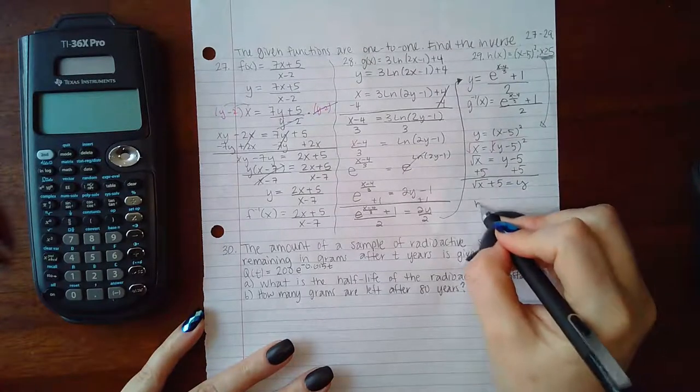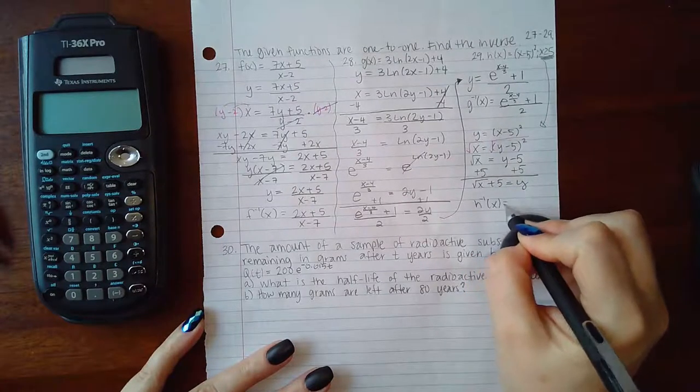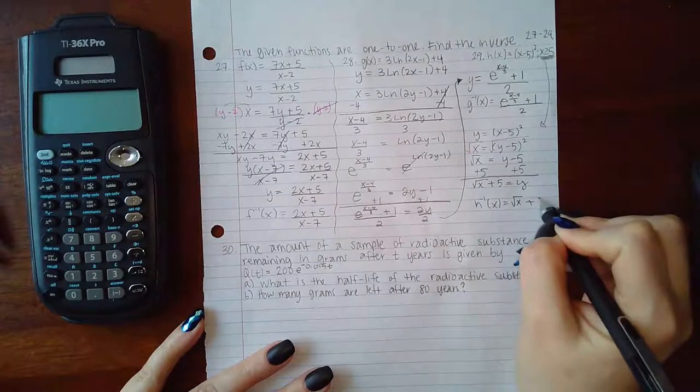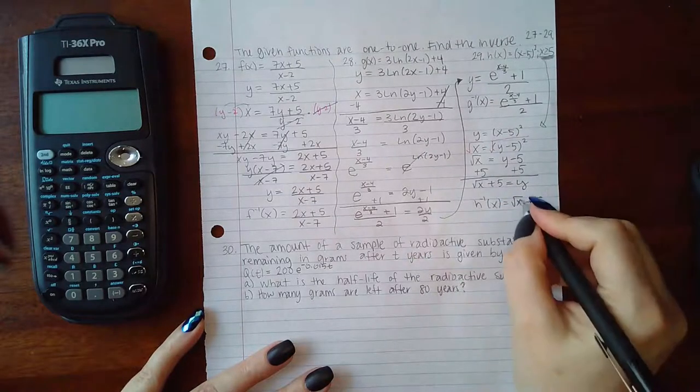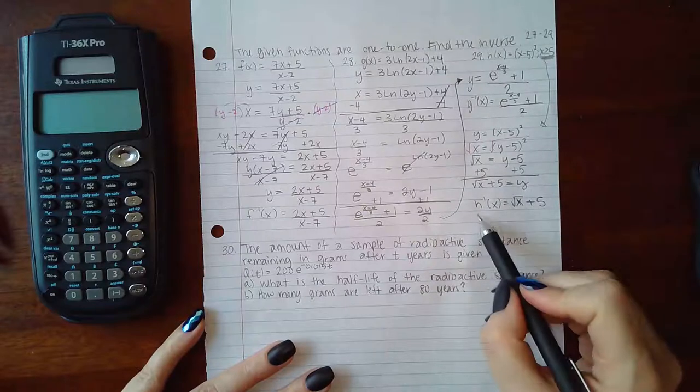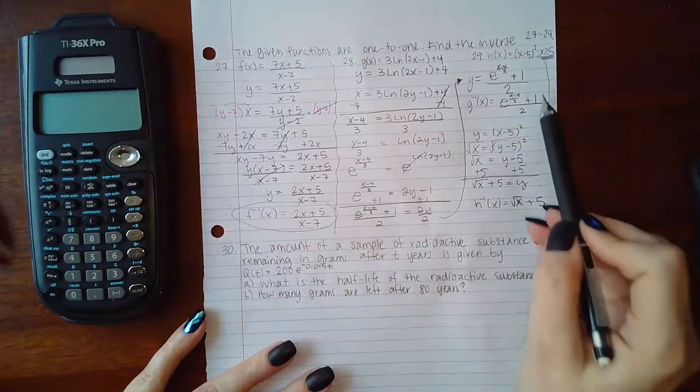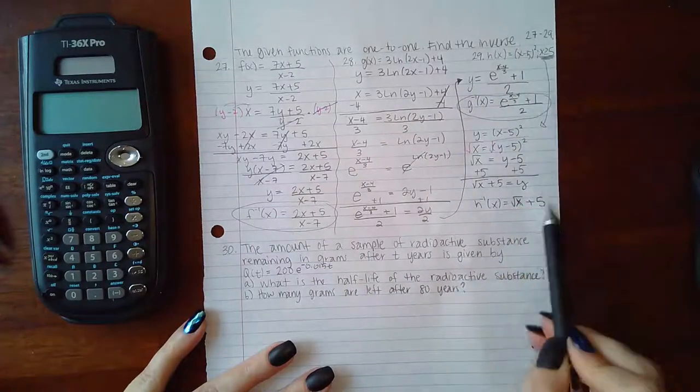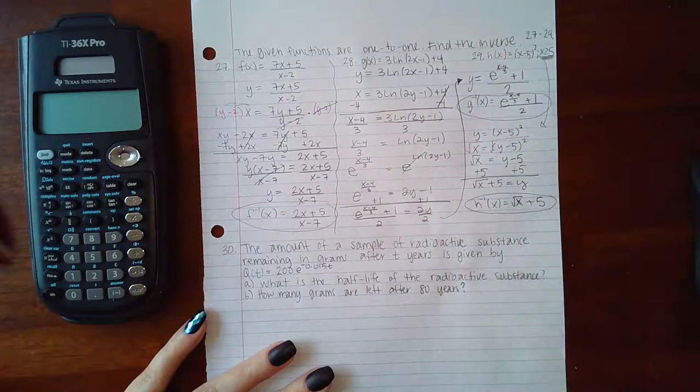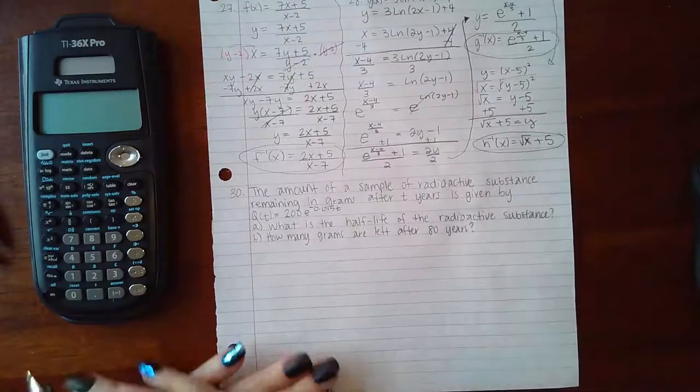So I get that the square root of x plus 5 equals y, and then change this into the function notation, the inverse function notation. So square root of x plus 5, and there we go. Now we have the answer for f inverse, we have the answer for g inverse, and we have the answer for h inverse.